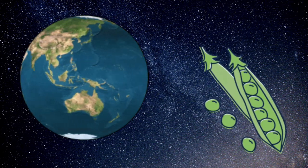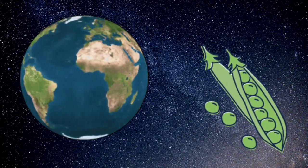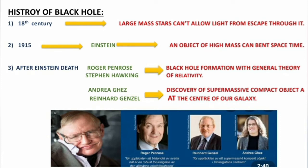The black hole cannot be seen directly, but here you can see this black hole because of the space-time bend. In the work of Einstein, Roger Penrose, and Stephen Hawking on the General Theory of Relativity and black holes, Andrea Ghez and Reinhard Genzel confirmed a super-massive compact object in the center of the galaxy.